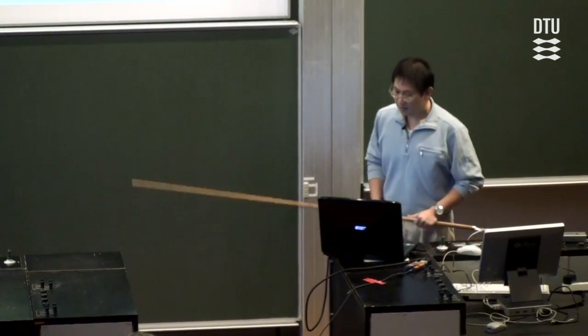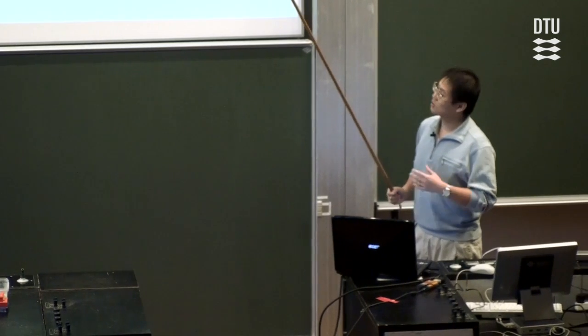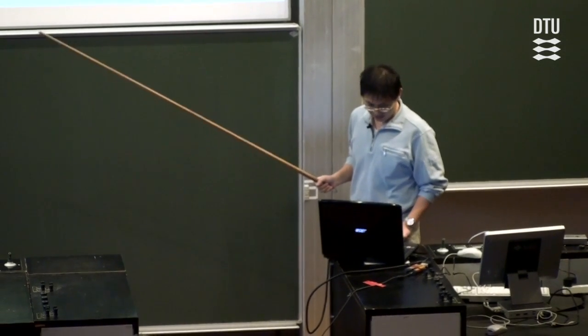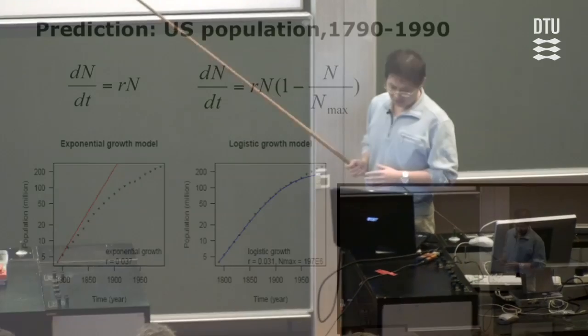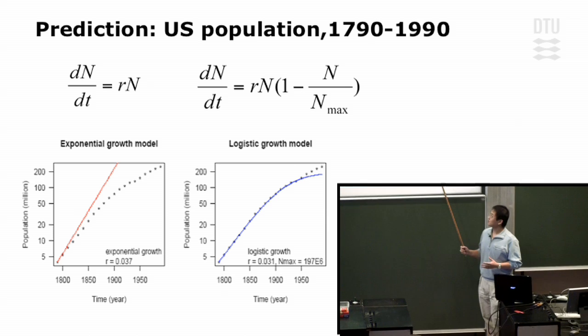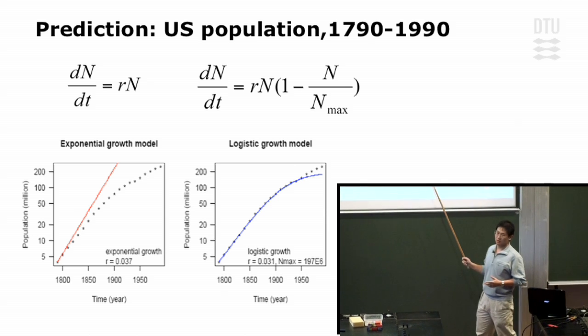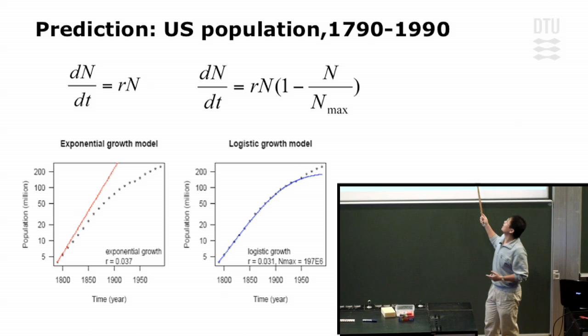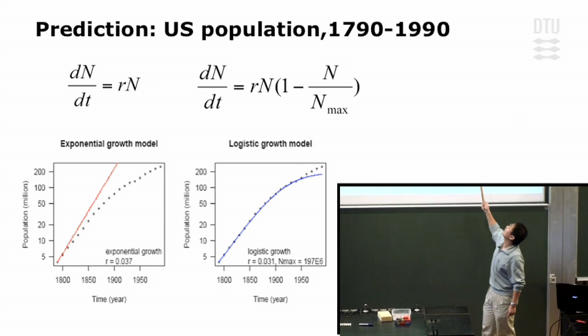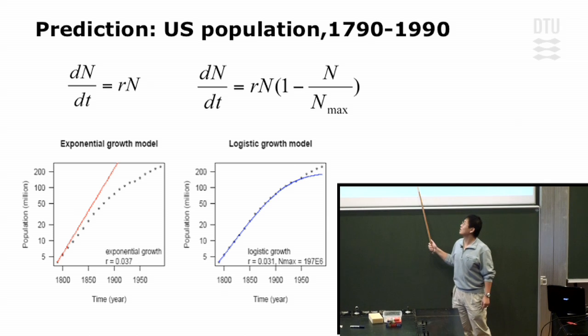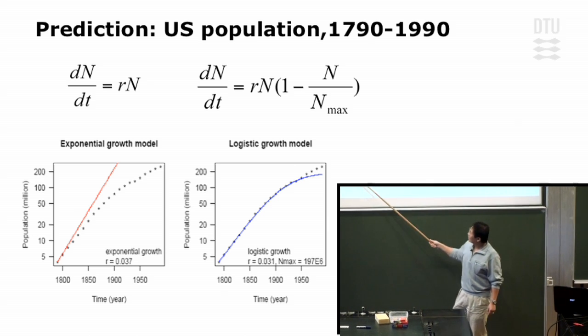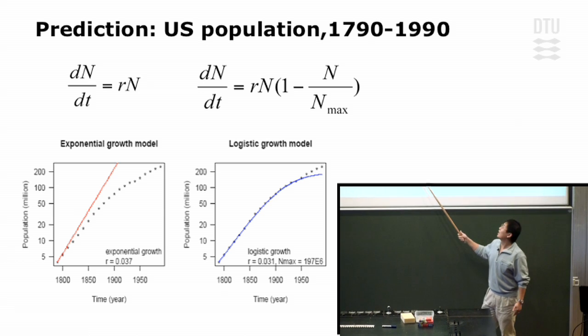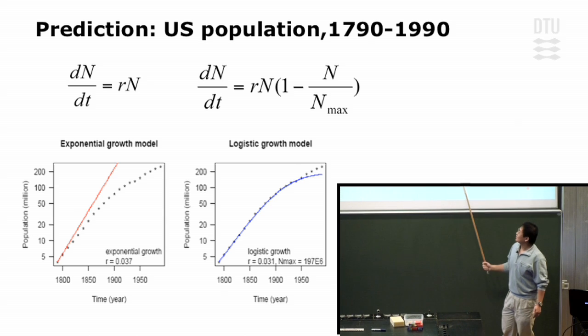So far we've been talking about how to convert biological problems into ODEs. Now I want to tell you something about the application. The first application of ODE here is to make predictions. Let's continue with the population growth model. I'll try to predict the population in the United States between the year 1790 to 1990 using two different population growth models. This one in the left panel, as you can see, is the one I just showed you. It's called the exponential growth model, and the one on the right is the logistic growth model.